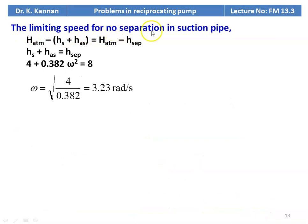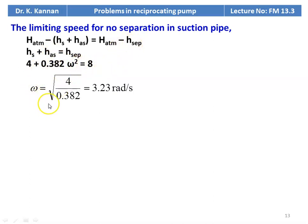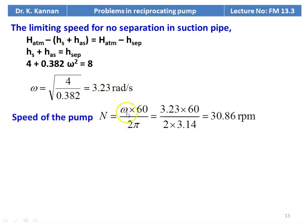Limiting speed for no separation in the suction pipe: writing the head equation, H_atm − (HS + H_CIS) = H_atm − H_separation, simplifying: HS + H_CIS = H_separation. Substituting HS = 4, H_CIS = 0.382ω² = 8, so ω = √(4/0.382) = 3.23 rad/s. Speed N = ω × 60/(2π) = 3.23 × 60/(2×3.14) = 30.86 RPM.